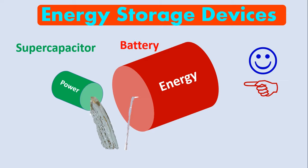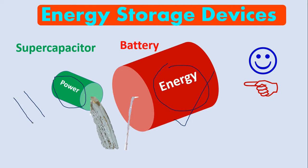A battery gives us large energy density — we use it if we need something for a long time. A supercapacitor has high power density — we use it if we need something for a very short time.